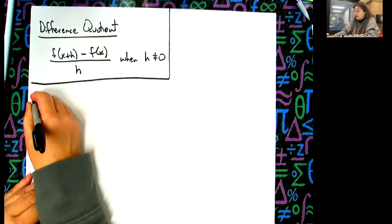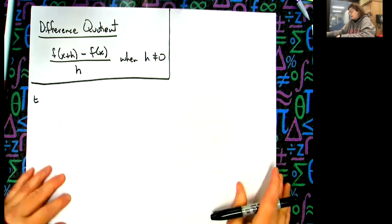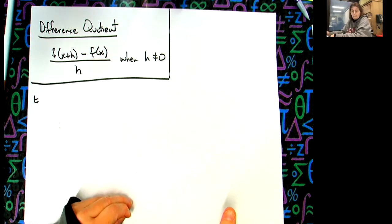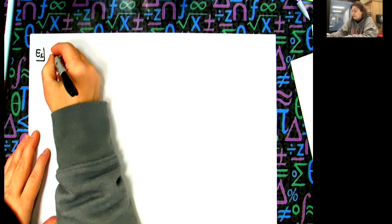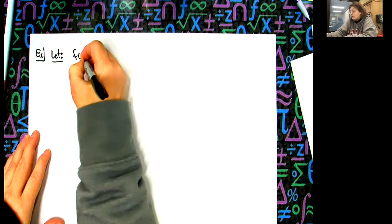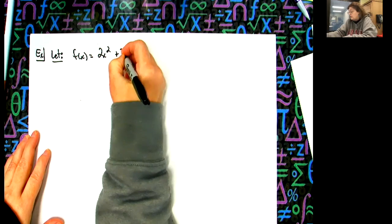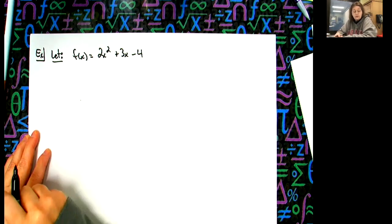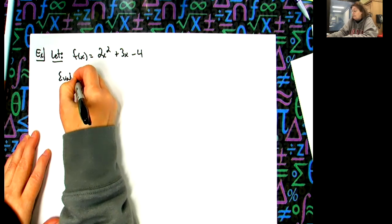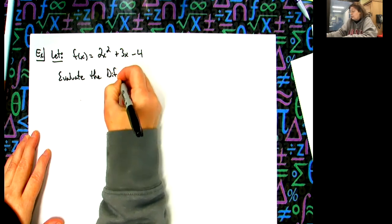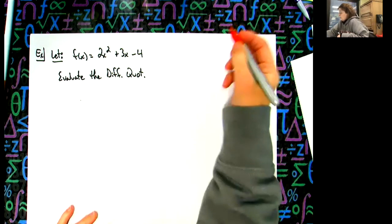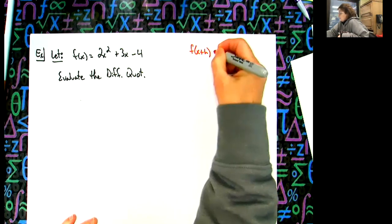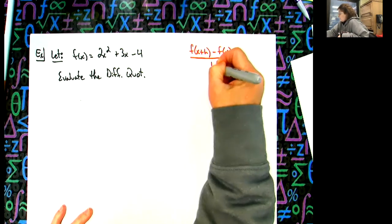I'm going to go to a new piece of paper because this is going to be a long problem. You're going to see questions that say: let f of x equal 2x squared plus 3x minus 4. We're going to let that be the function, and then it's going to say evaluate the difference quotient. You have to know what the difference quotient is because they're not going to give it to you. So I'll write it over here: f of x plus h minus f of x, all over h.